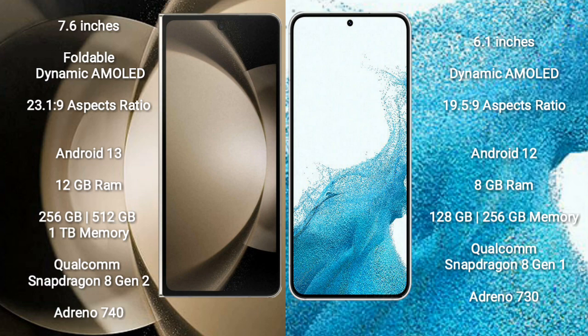Samsung Galaxy Z Fold 5 comes with 12GB of RAM and 256GB, 512GB, or 1TB internal storage, Qualcomm Snapdragon 8 Gen 2 processor and GPU Adreno 740. Samsung Galaxy S22 comes with 8GB RAM and 128GB or 256GB internal storage, Qualcomm Snapdragon 8 Gen 1 processor and GPU Adreno 730.